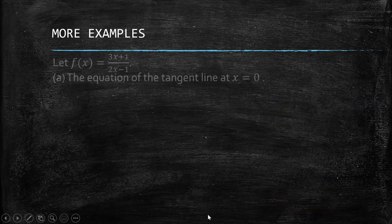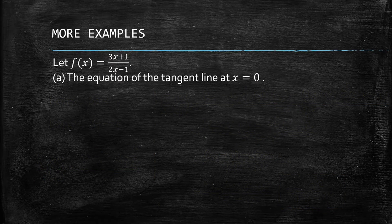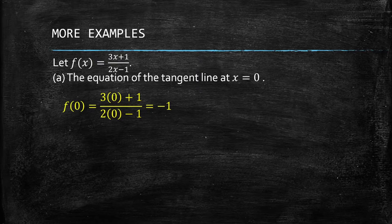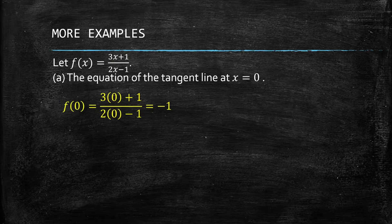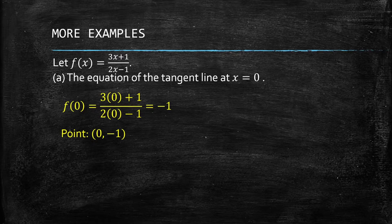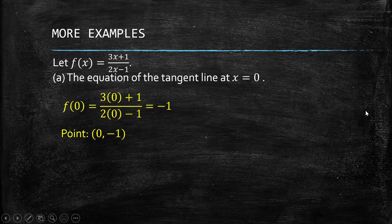For part b, we are asked to find the equation of the tangent line at x = 0. Instead of using the limit definition — which would take a long time for this function — it's much easier to use the derivative we just found. For the tangent line, we need to know the value of y and x. We solve for the point first by substituting x = 0 into the function, giving us the point (0, -1), since f(x) is y.